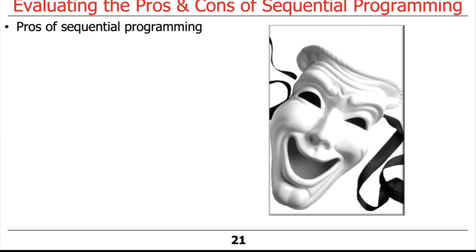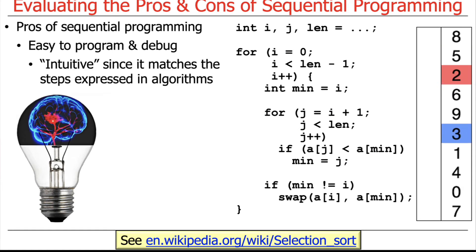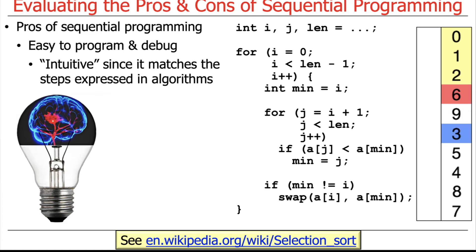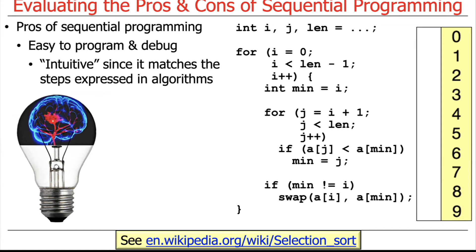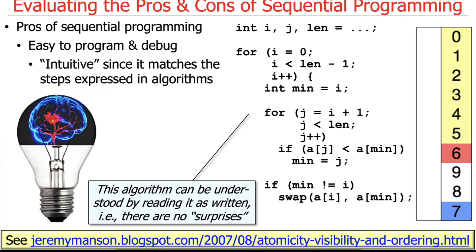So what are some pros and cons of sequential programming? Sequential programs are typically easier to write and debug. They're intuitive because the steps expressed in the algorithms correspond to reading the code top to bottom, left to right. Here's the code for selection sort — you can see it's happily visualizing selection sort over here. Once you know how it works, this code is very straightforward, easy to debug, with no surprises.